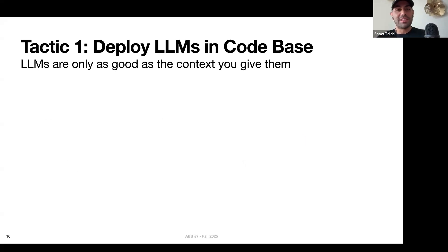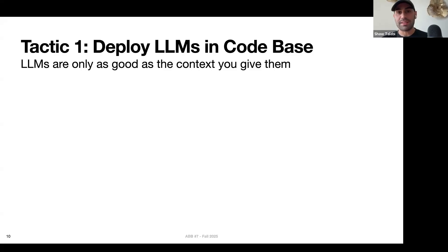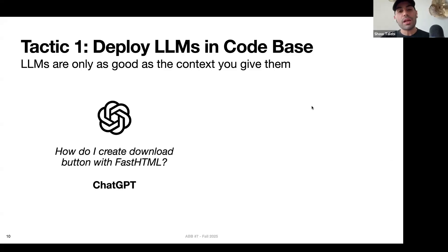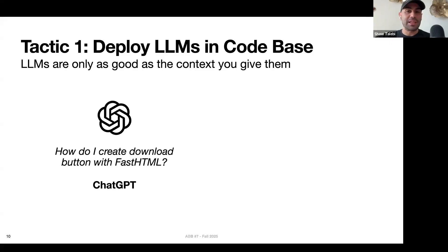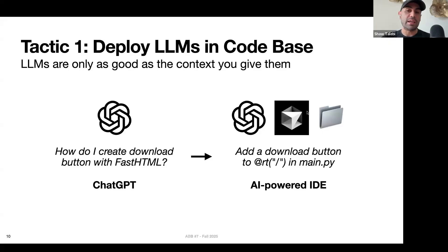The first tip is to deploy LLMs into your codebase — really the zeroth tip, and the easiest way to speed up development. LLMs are only as good as the context you give them, and for coding tasks the best context is the codebase itself. If you're not doing this, you might be going to ChatGPT and asking something like 'how do I create a download button with FastHTML?' — the way many of us used to Google and search Stack Overflow for code snippets. Now that LLMs can do that work, it's very helpful to have an AI-powered IDE like Cursor where the LLM has direct access to your entire repository.